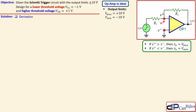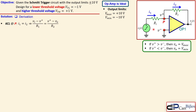We apply Kirchhoff's current law (KCL) at node P. We can say I1 equals I2, since no current flows into the ideal op-amp. The voltage across R1 is (VI minus V+) over R1, which equals I2, which is (V+ minus VO) over R2. Now we simplify by cross multiplication: R2 times (VI minus V+) equals R1 times (V+ minus VO). Working out the parentheses and collecting the V+ terms, we rearrange to get R1·VO on the left side.